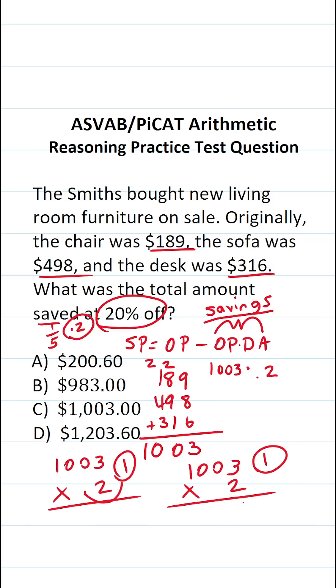2 times 3 is 6. 2 times 0 is 0. 2 times 0 is 0. 2 times 1 is 2, bringing our one decimal. We can see that 1,003 times 0.2 is going to be $200.60.